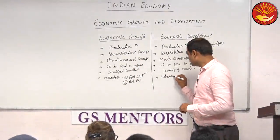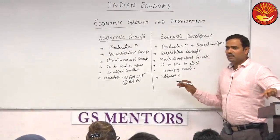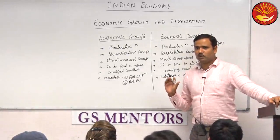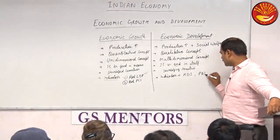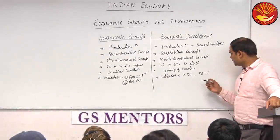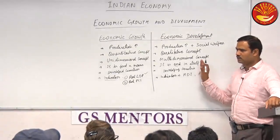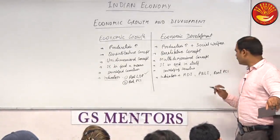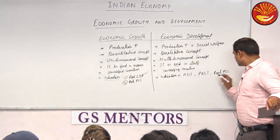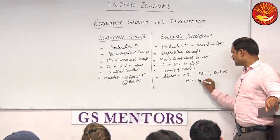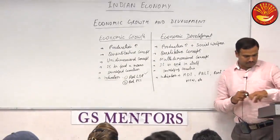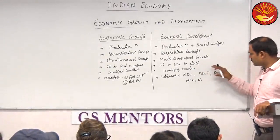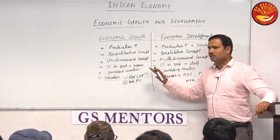What are the indicators of economic development? The most famous indicator is the Human Development Index, HDI. Before HDI, other indicators were also used — like PQLI, the Physical Quality of Life Index, which was a very famous indicator earlier. Real per capita income was also used earlier. There are various indicators of economic development which we will discuss in the next section. So I think the basic difference between economic growth and economic development should be clear.